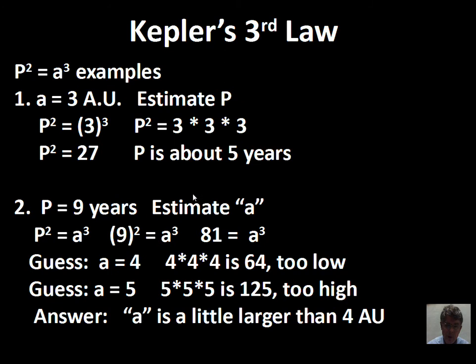If we go the other way, suppose someone tells you that an object takes nine years for one orbit around the sun. Let's estimate the semi-major axis. So P² = a³. Nine squared gives us 81 = a³. Now we need by trial and error to find some number that when we cube it, we get something near to 81. Two cubed, 2 × 2 × 2 is eight. Three cubed, 3 × 3 = 9, another three multiplied makes 27. That's still too low.